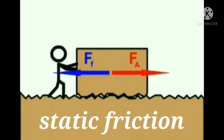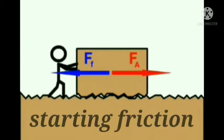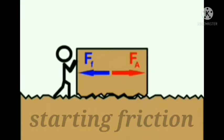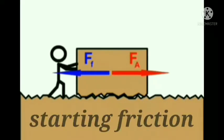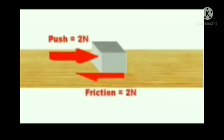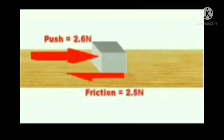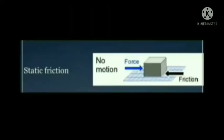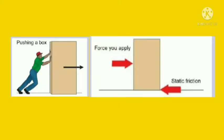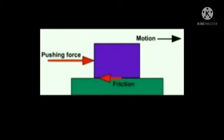Static friction is a kind of starting friction because an object just tends to start moving — it does not actually move. Static friction does not exist by itself. When there is no applied force, there is no static friction. It comes into play only when an applied force exists on an object.